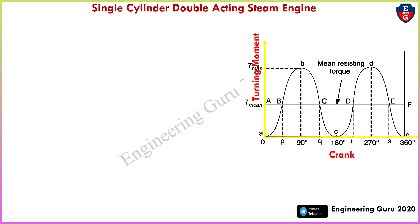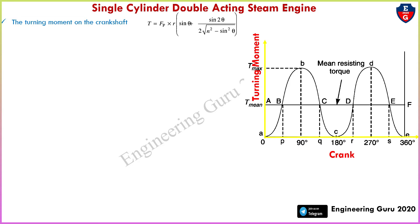On the x-axis is the crank angle and on the y-axis vertically is the turning moment. As we know, the turning moment T equals F into r. We have the formula: T = Fp × r × (sin θ + sin 2θ / (2 × √(n² − sin² θ))), where Fp represents piston effort, r is the radius of the crank, n is the ratio of the connecting rod length to the radius of the crank, and θ is the angle turned by the crank from the IDC.